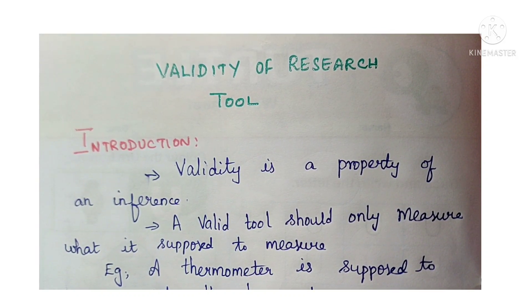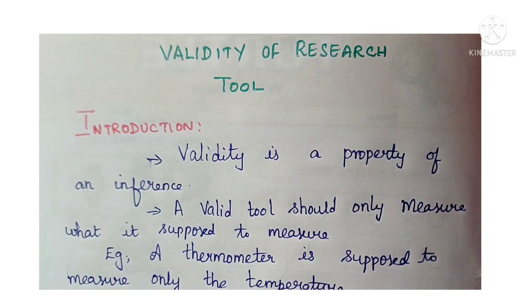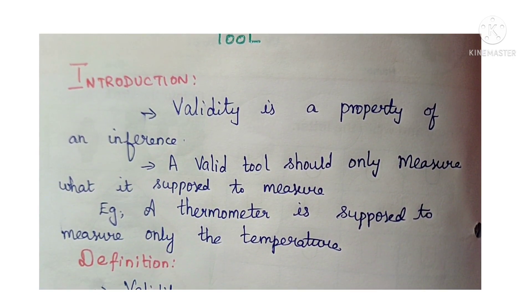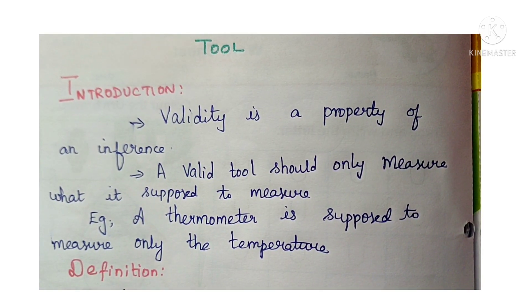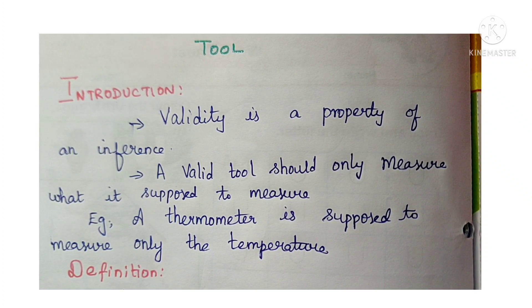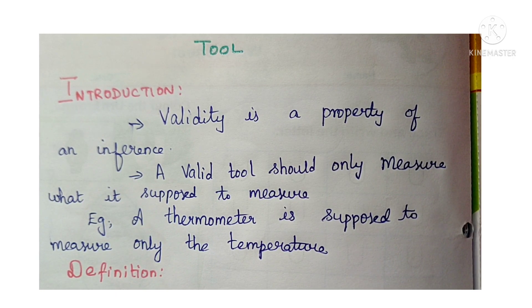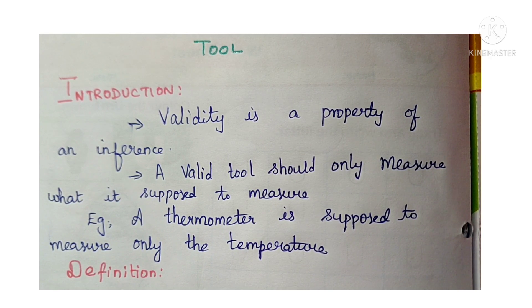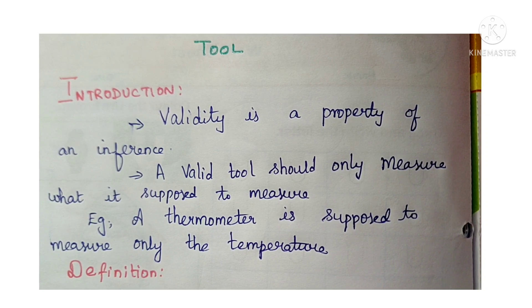Introduction to validity. Validity is a property of an inference. Your valid tool should only measure what it is supposed to measure. For example, a thermometer is supposed to measure only the temperature, and a sphygmomanometer is supposed to measure only the blood pressure. For example, a thermometer very well measures temperature.